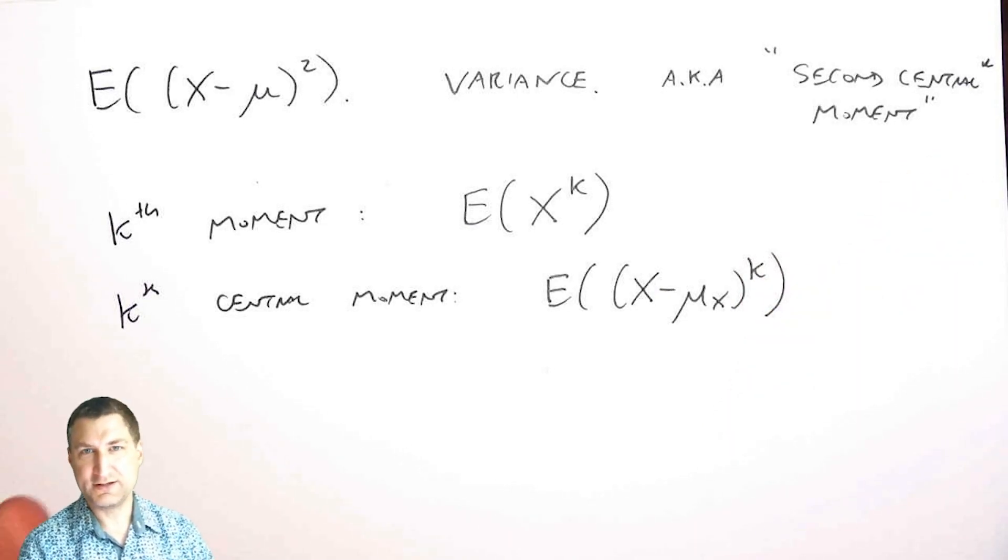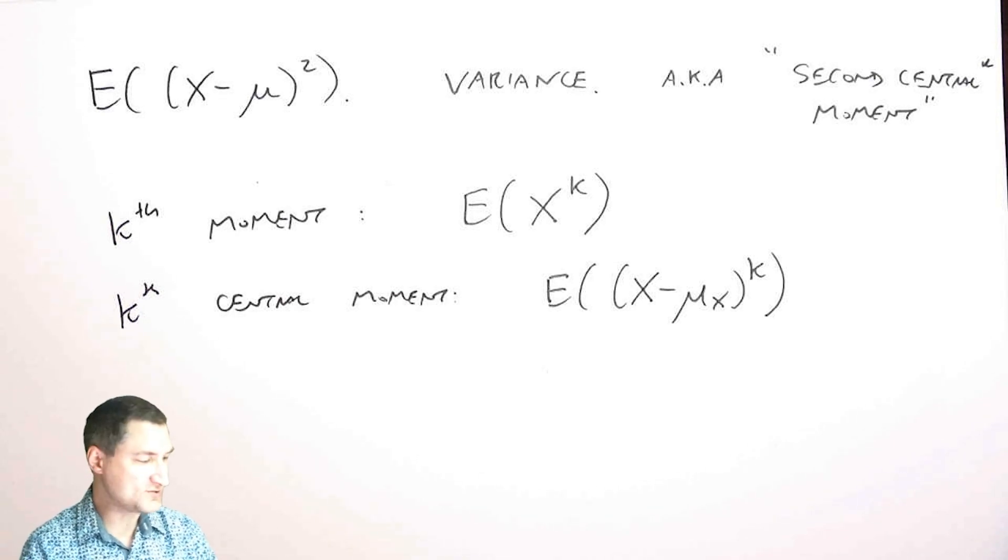And sometimes if you look at probability textbooks, you'll see things called the skew and the kurtosis. This is what happens when you have k equals like three and four and so on. You rarely have to deal with that in kind of a first probability class.